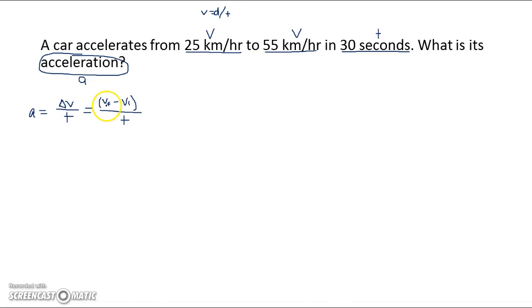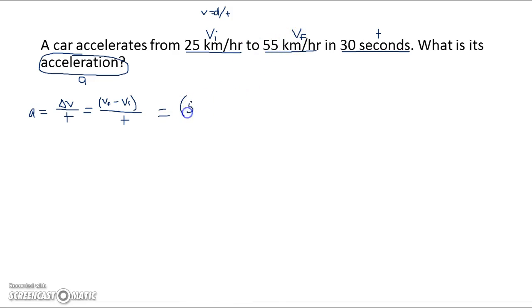To solve this problem, we have to have a VF and a VI. It starts at 25 kilometers per hour, so that's the VI, and it stops at 55 kilometers per hour, so it's going to go VI to VF. Now we just have to plug in and solve for A. So VF is 55 kilometers per hour, and from that we're going to subtract the VI, which is 25 kilometers per hour, and then all that goes over the time, which in this case is 30 seconds.